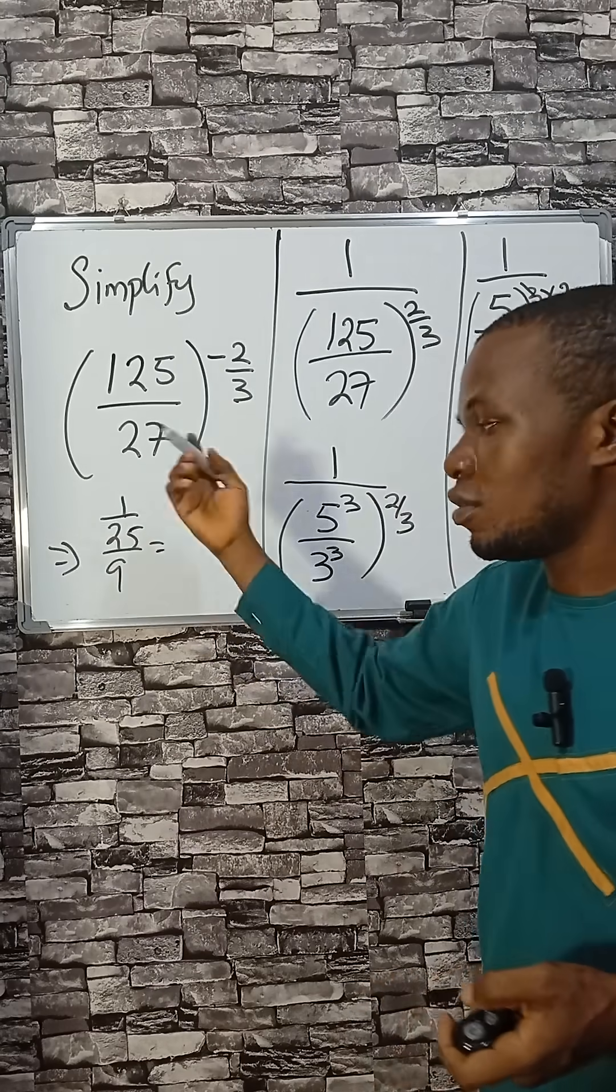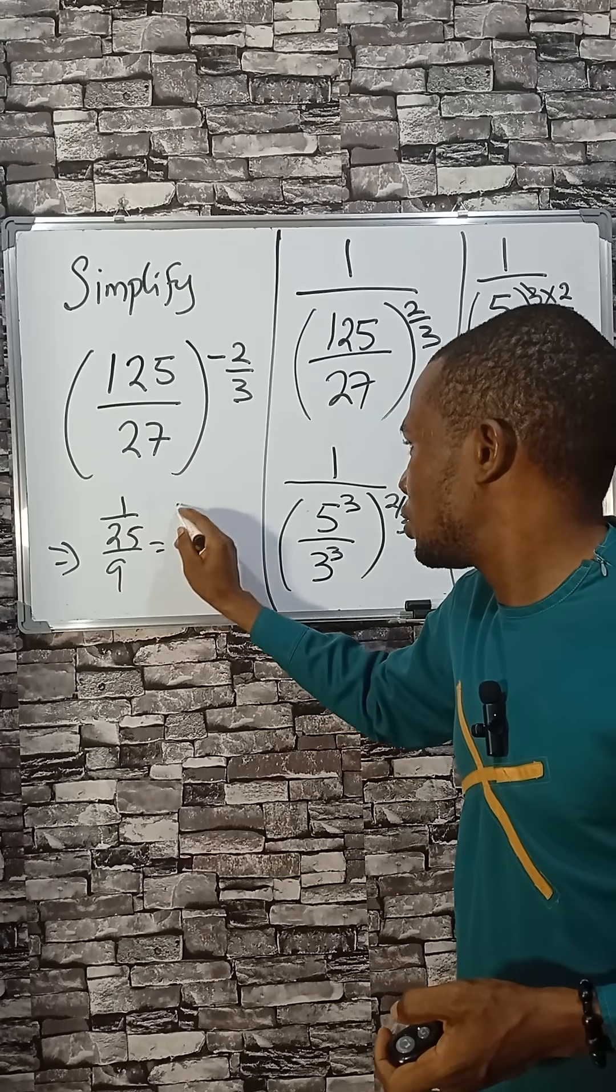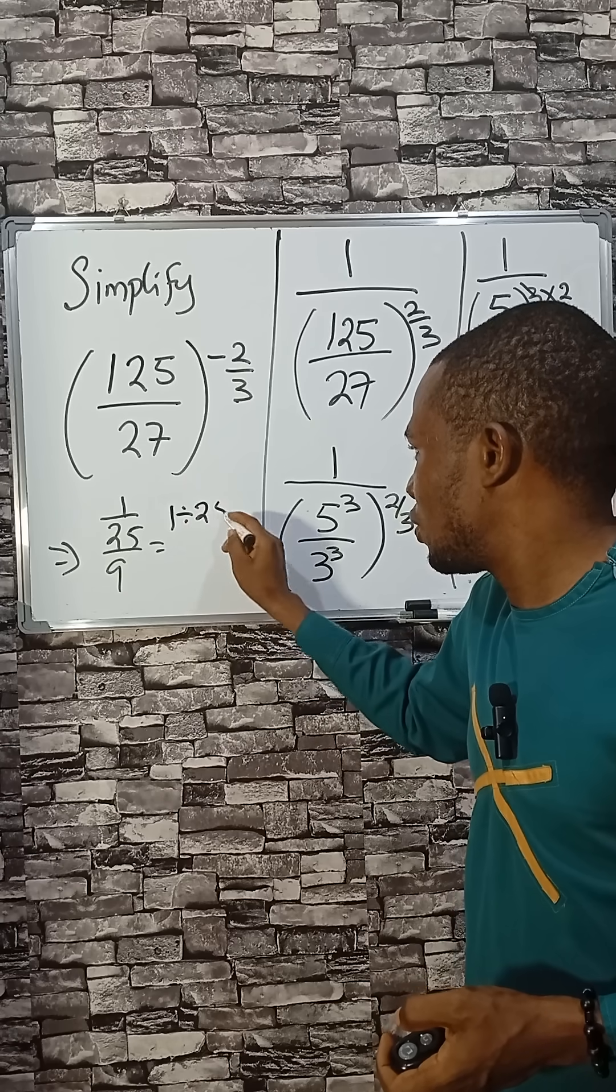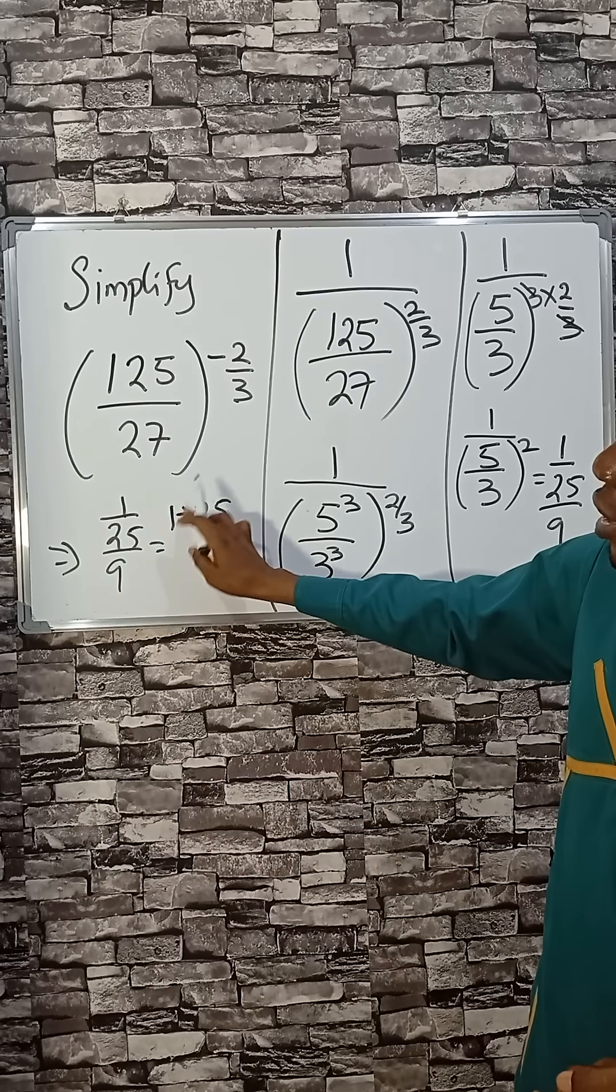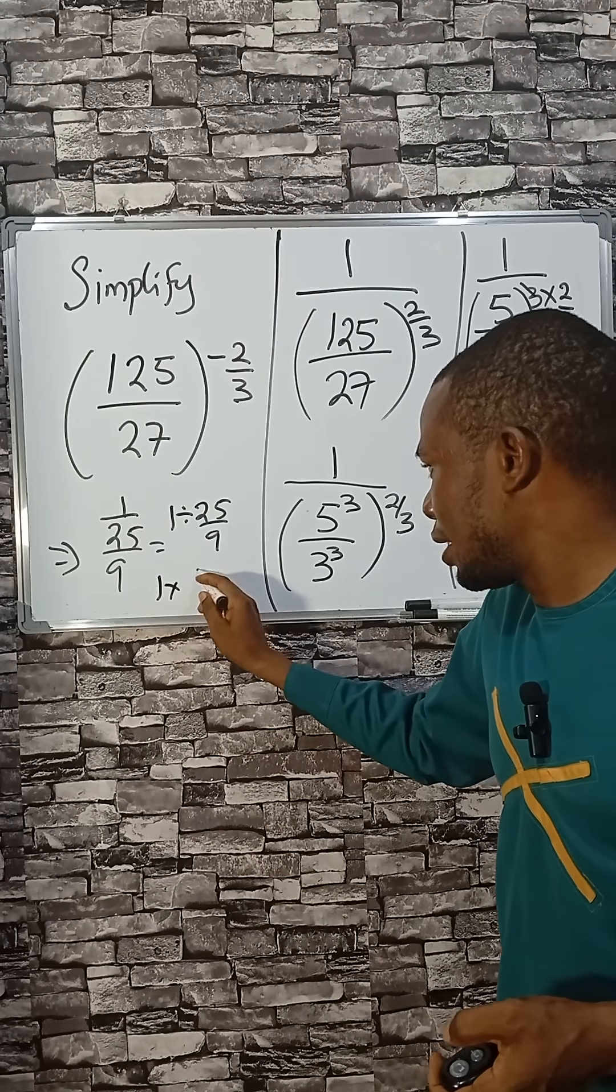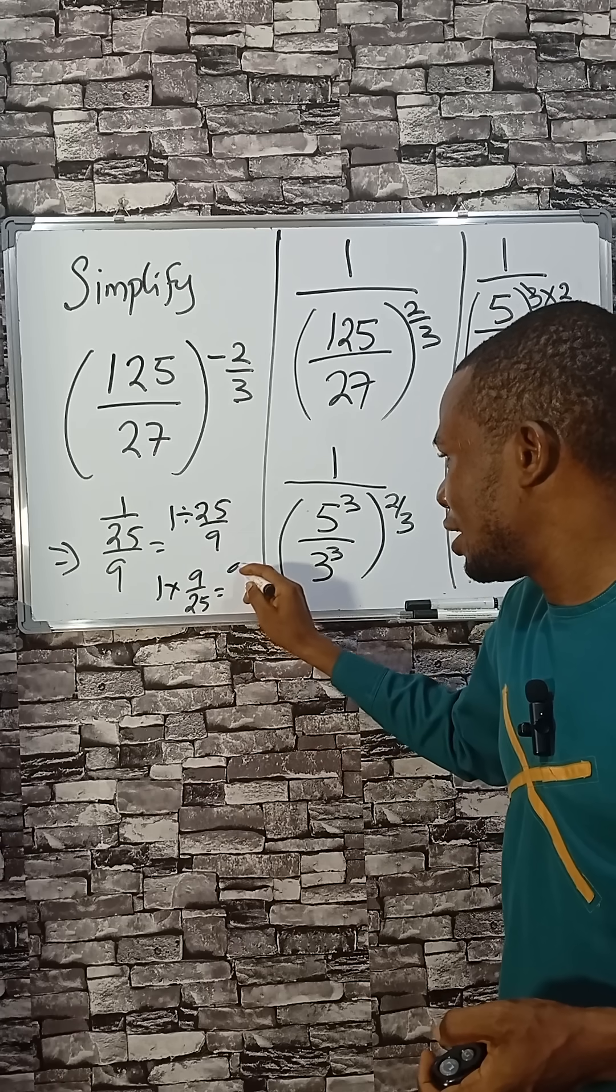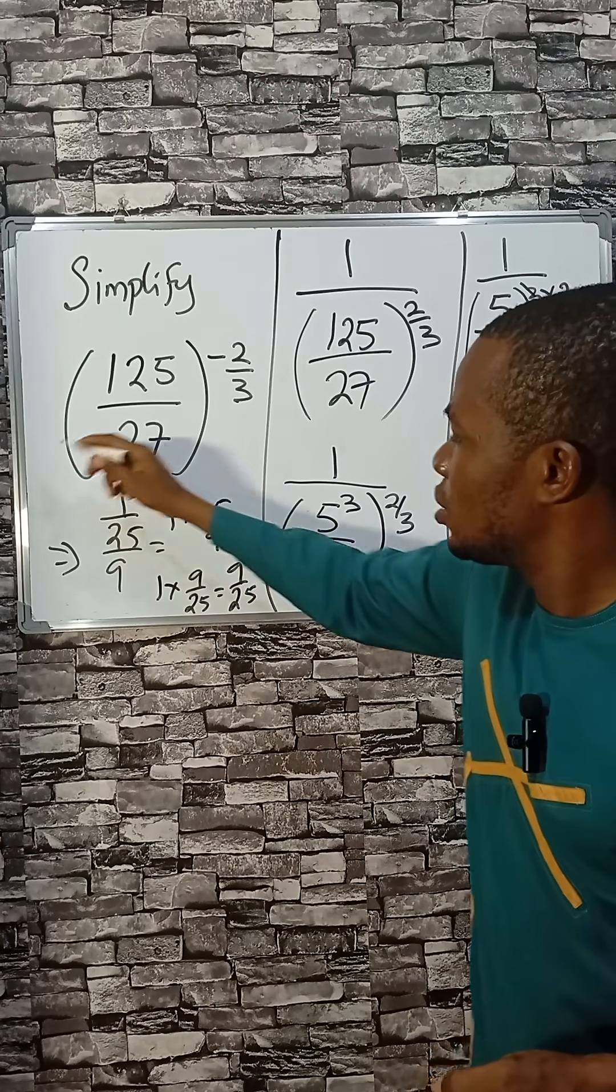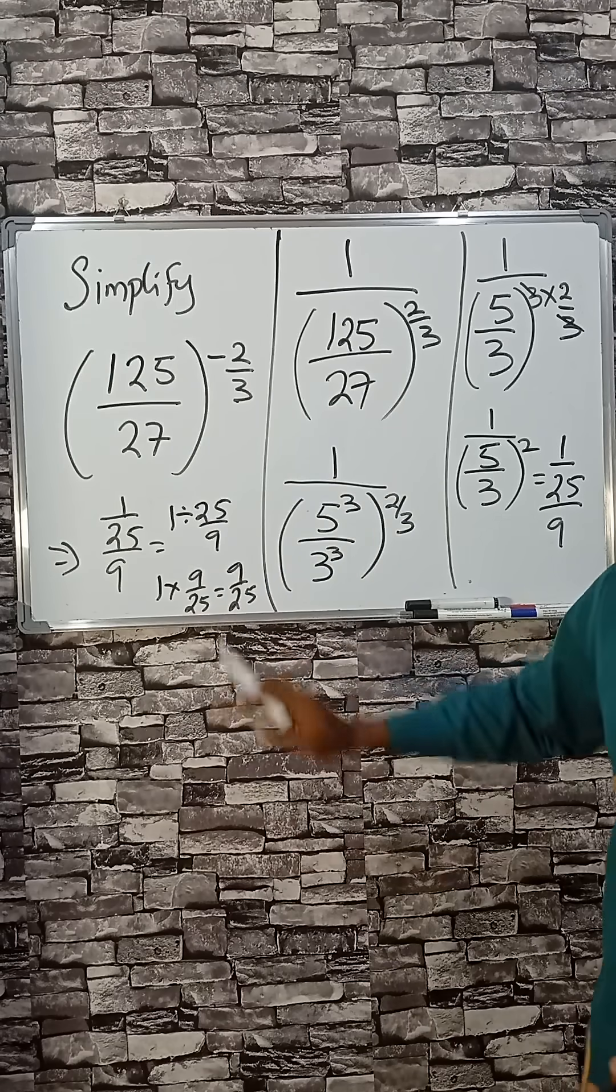That means if you take the inverse of this, that will be 1 divided by 25 divided by 9. If you want to change this sign to multiplication, that will be 1 times 9 divided by 25. So the answer is 9 over 25. So the whole of this gives you 9 divided by 25. This is the answer.